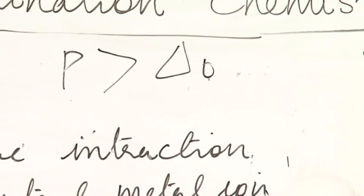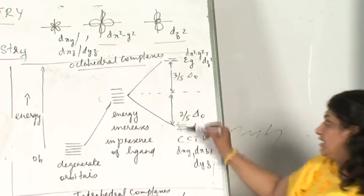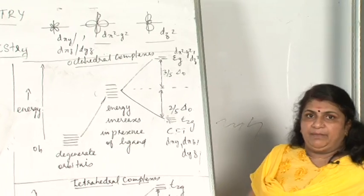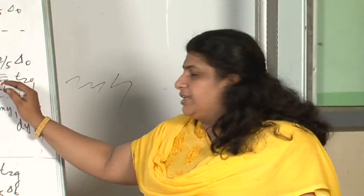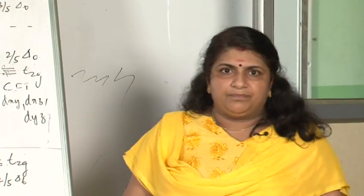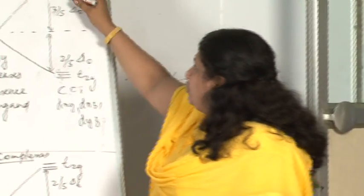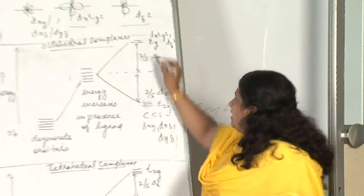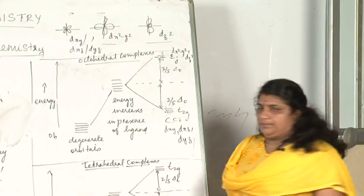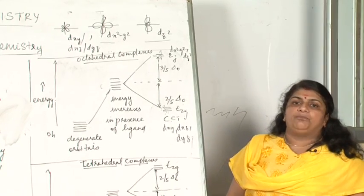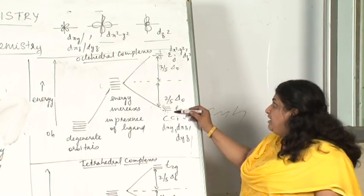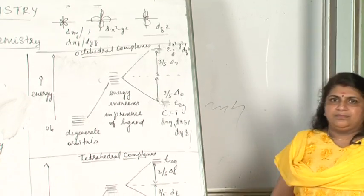Naturally what will happen? The electron will go up. Pairing energy is high so pairing will not take place. It will go up naturally. So you will have the configuration: there are 5 electrons, 3 electrons here, 2 electrons here. Highly paramagnetic compounds result. These are spin-free complexes.